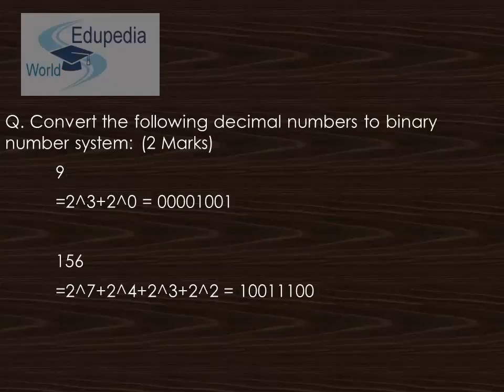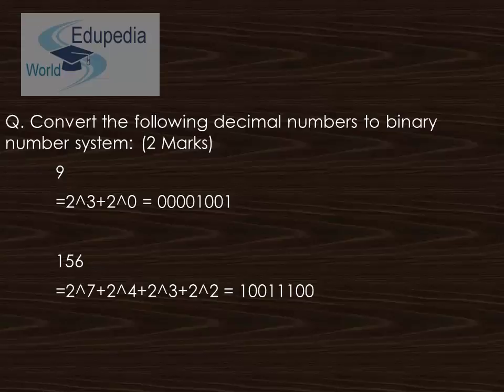Then comes the question to convert the following decimal numbers to the binary number system. Again by using the two-raised-to-the-power formula, we find the equivalent binary bits for the given decimal numbers.